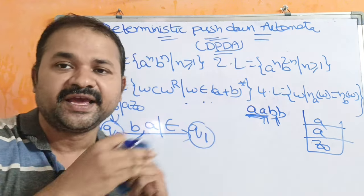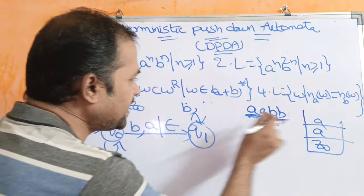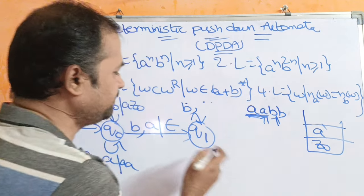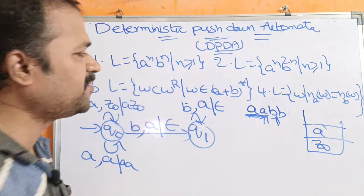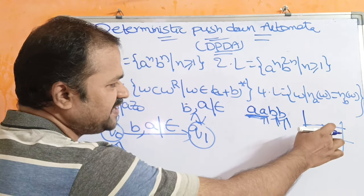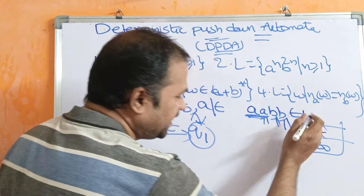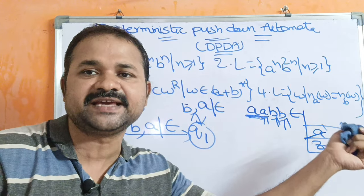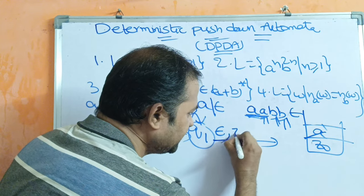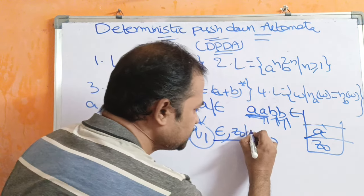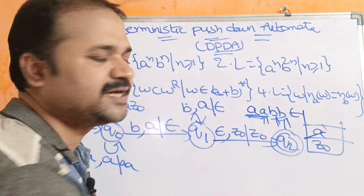At Q1, if we read any number of B's — specifically if the symbol is B and the stack's topmost symbol is A — then we perform the POP operation. Epsilon denotes the end of the string. If the input symbol is epsilon and the stack is empty, then keep the stack content as is and move from Q1 to Q2. Q2 is the final state. You need to explain at least one example.